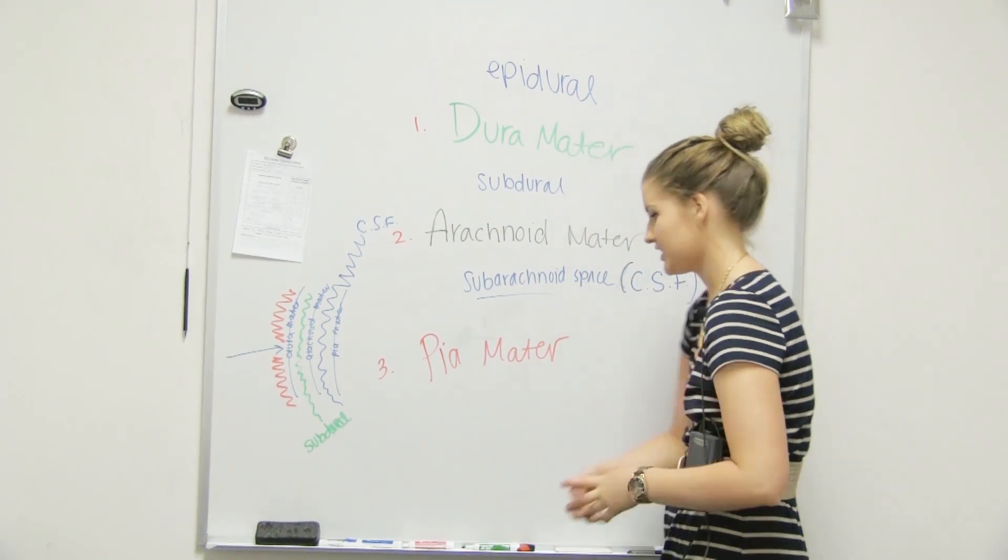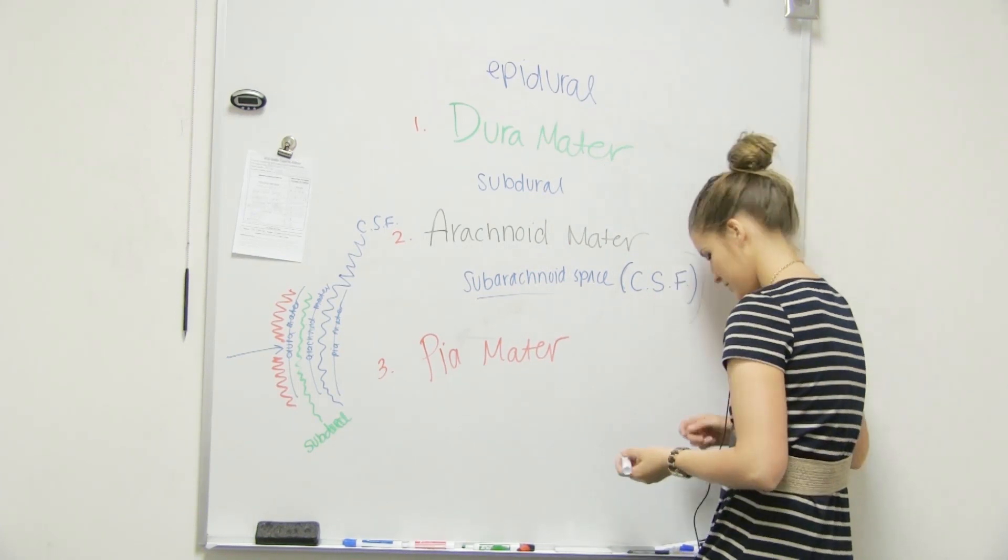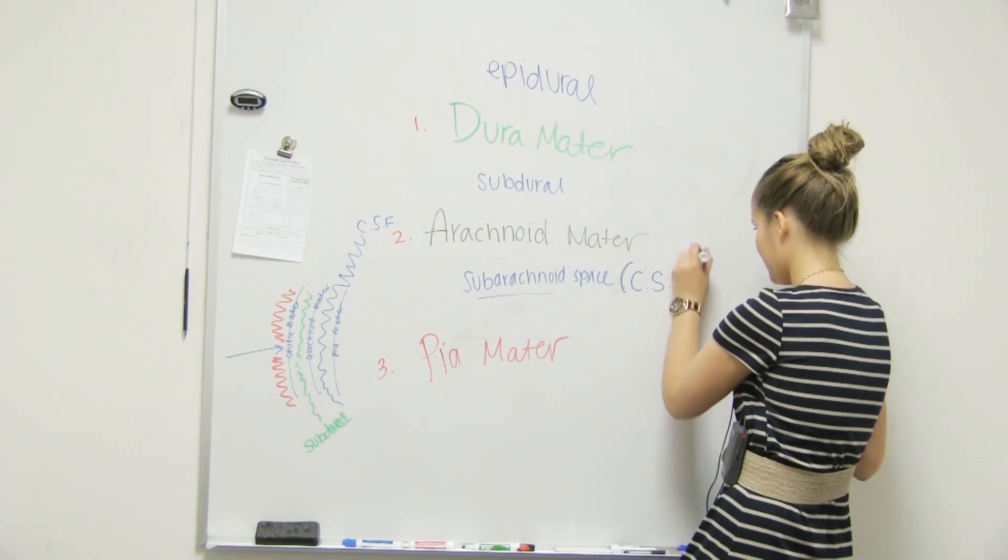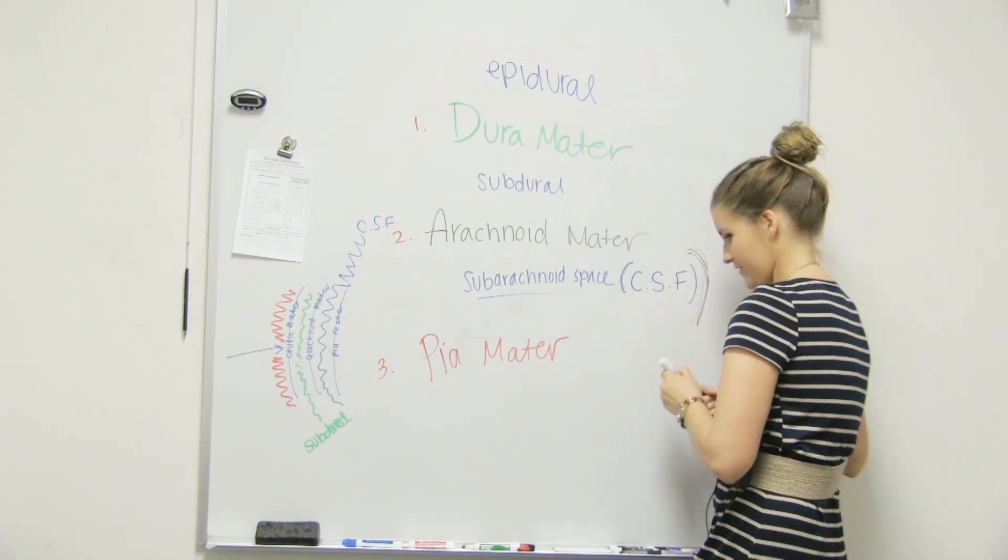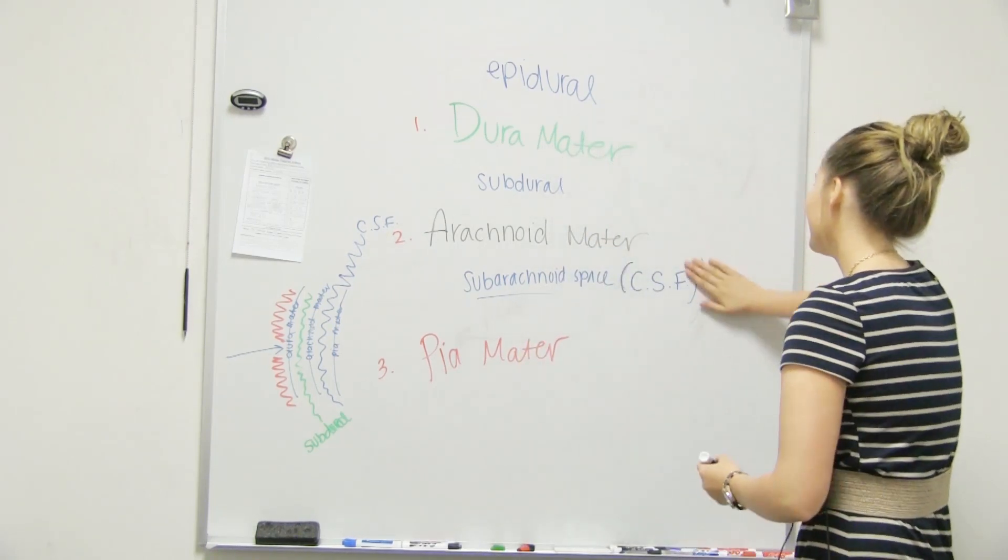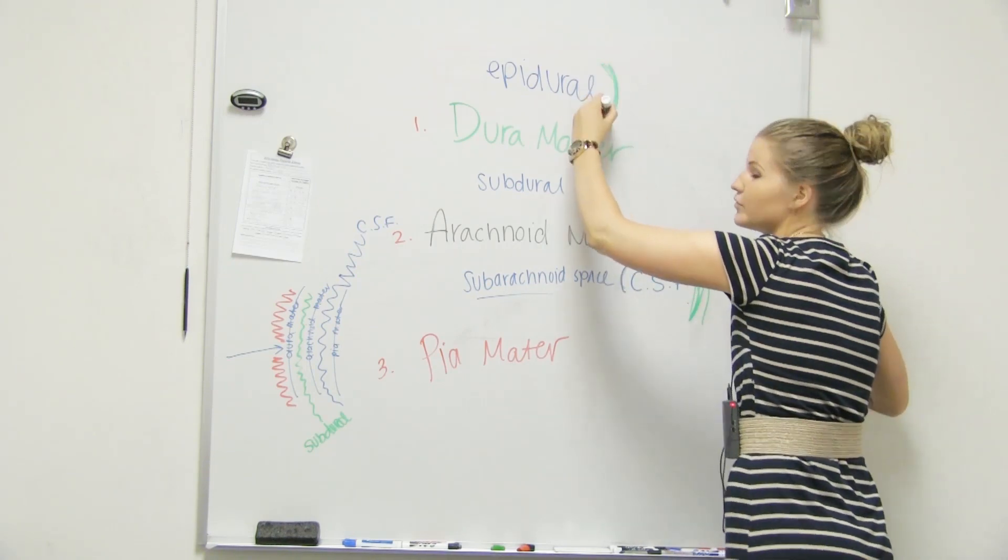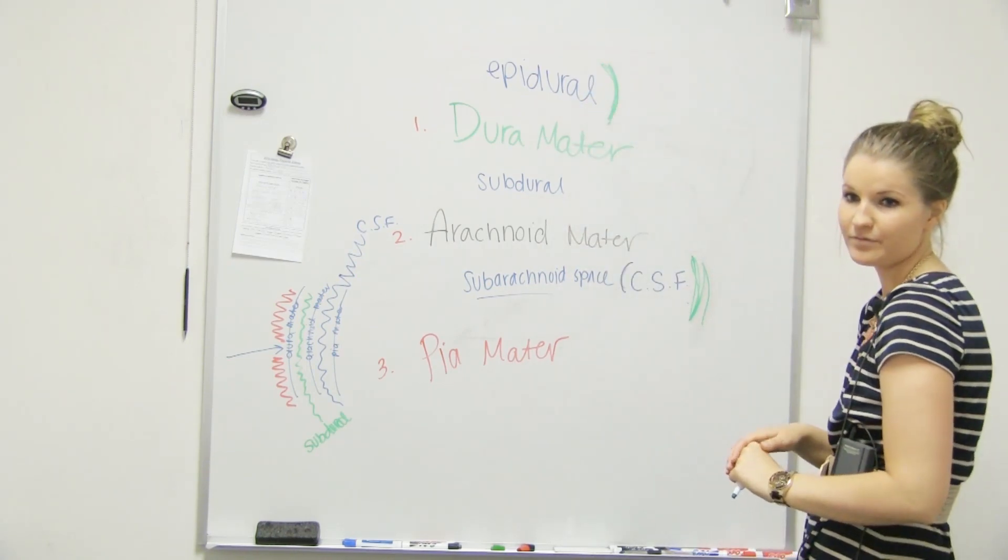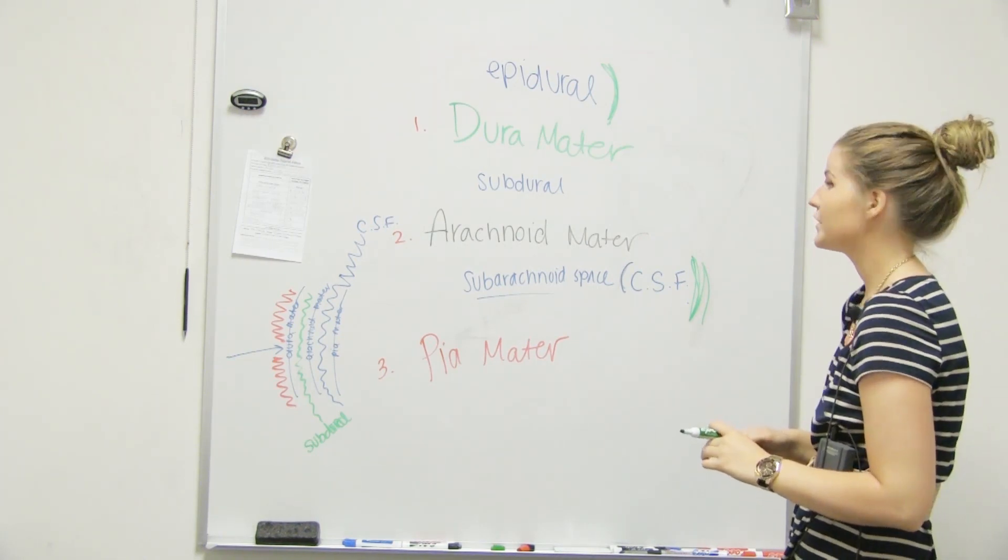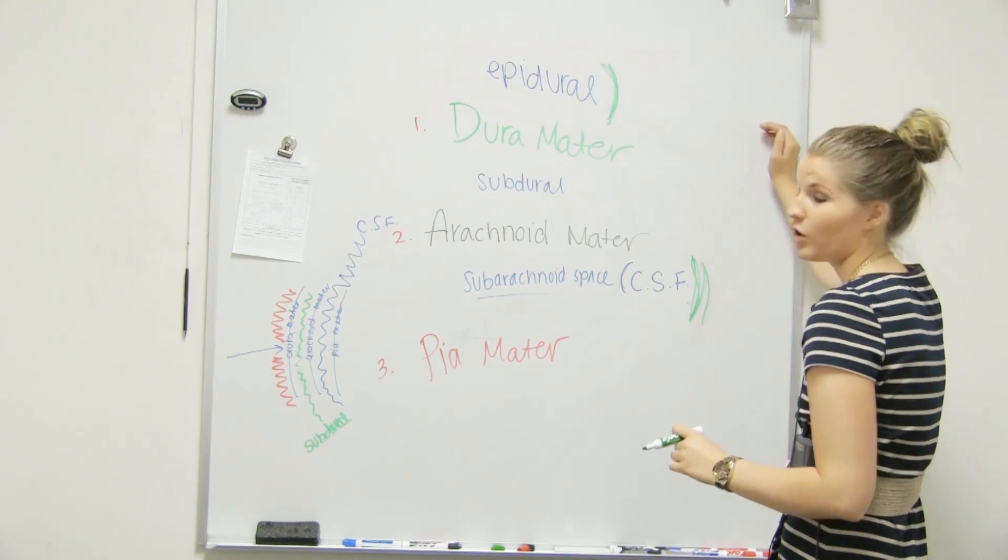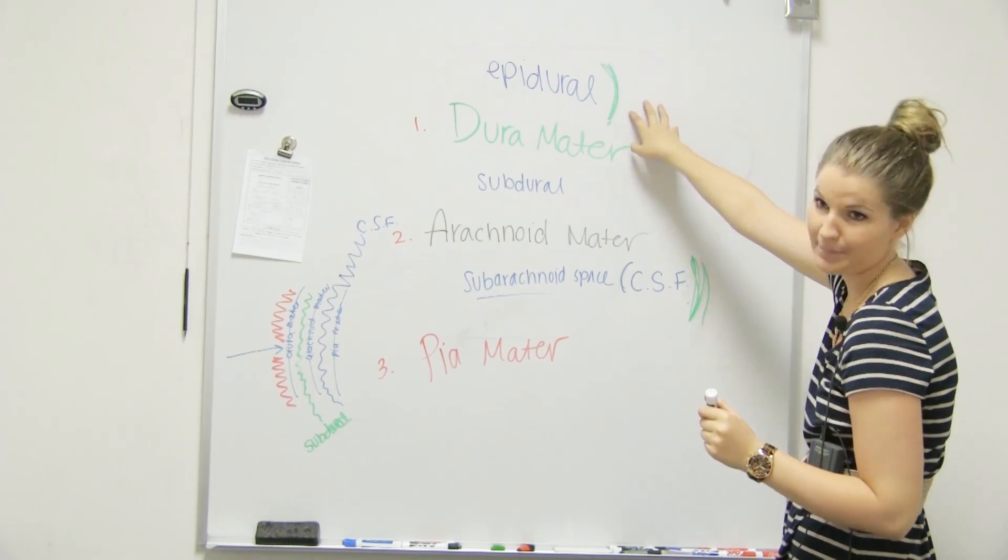So names of the injections. We're kind of only going to inject things right here and right here. At least for the ones you have to know. So only in the subarachnoid space and the epidural.